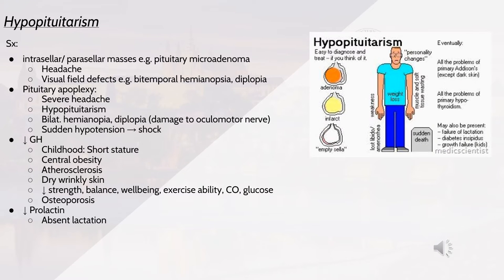Signs and symptoms of hypopituitarism include intrasellar or parasellar masses such as pituitary microadenomas. The patient may experience headaches or visual field defects such as bitemporal hemianopsia. Hemianopsia is loss of vision on one half of the visual field — if homonymous, it's the same side; if heteronymous, the same visual fields of both eyes are affected. Temporal fields of both eyes are affected due to optic chiasm damage. Pituitary apoplexy presents as severe headaches, bilateral hemianopia, diplopia due to oculomotor nerve damage, and sudden hypotension which can lead to shock.